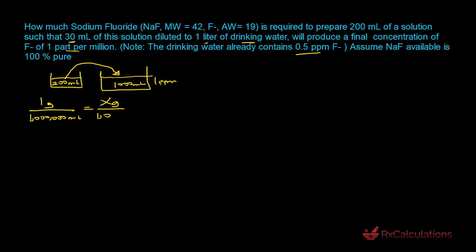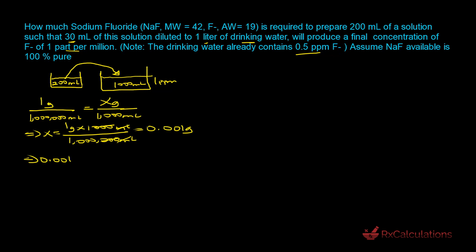Since we have a 1000 mL solution, we solve for x: x = 1 g × 1000 mL ÷ 1,000,000 mL = 0.001 grams. Converting to milligrams using 1 g = 1000 mg gives us 1 milligram. This 1 mg represents the total amount of fluoride ion required in the 1000 mL solution.